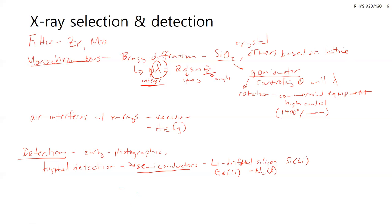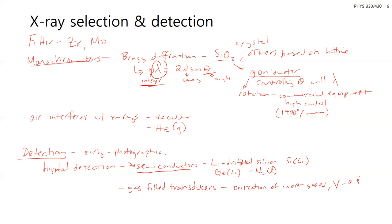Some other x-ray detectors that are not photographic include gas-filled transducers. When x-rays hit the gas within the detector, it causes ionization. These are typically inert gases — the right-hand side of the periodic table, argon, xenon, and the like. Once those gases are ionized — the x-rays are high energy enough to kick off one of those inner shell electrons — you have a charged gas, then you detect the potential produced by those charges. The voltage has to be amplified and is then electronically detected.